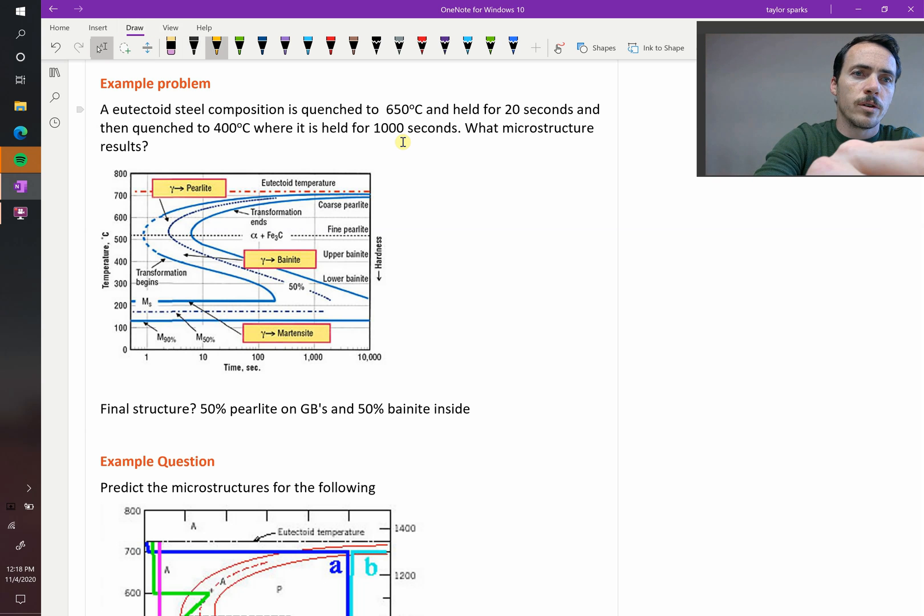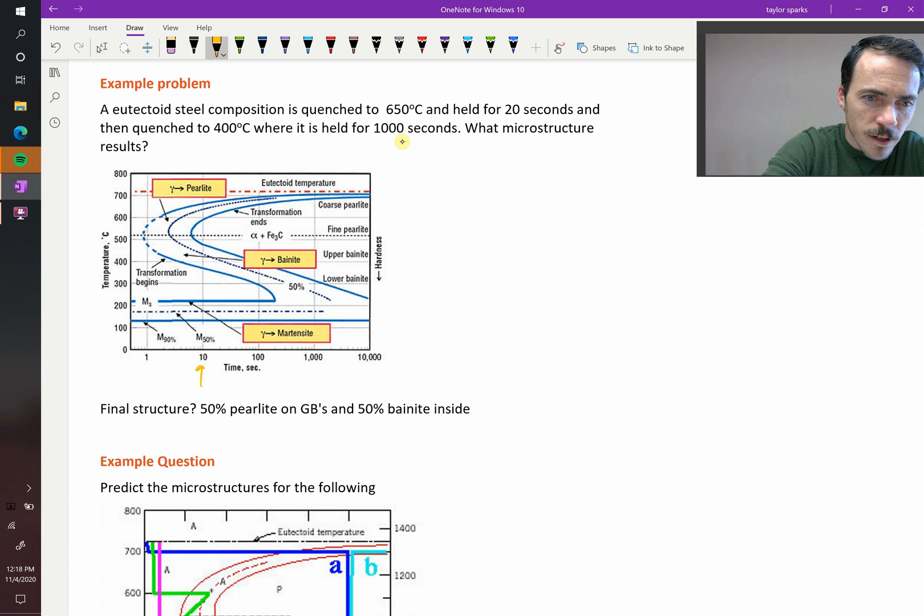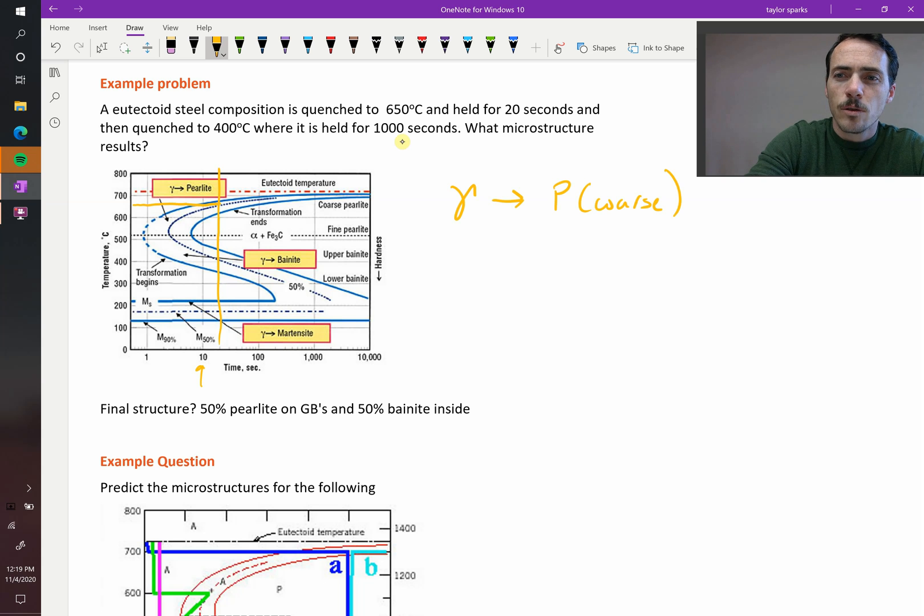So what would happen? Well, let's go to 650 C on this diagram. So at 650 C for 20 seconds, this is 10 seconds, so this would be 20 seconds right there. Now at 650 C, when I draw a line across here, it looks to me like we're basically right at that 50% line. So if we hold it for 20 seconds, what have we done so far? We've gone from austenite into perlite, and that is coarse perlite. But that's only 50% complete. Only 50% of our austenite has been consumed to form coarse perlite.